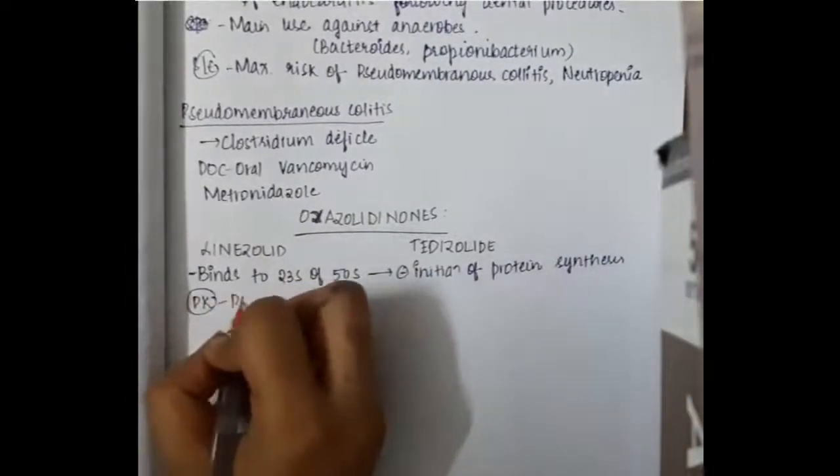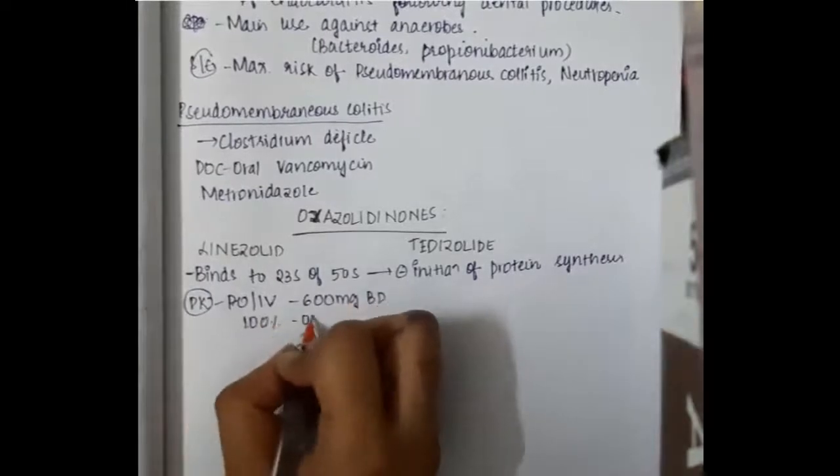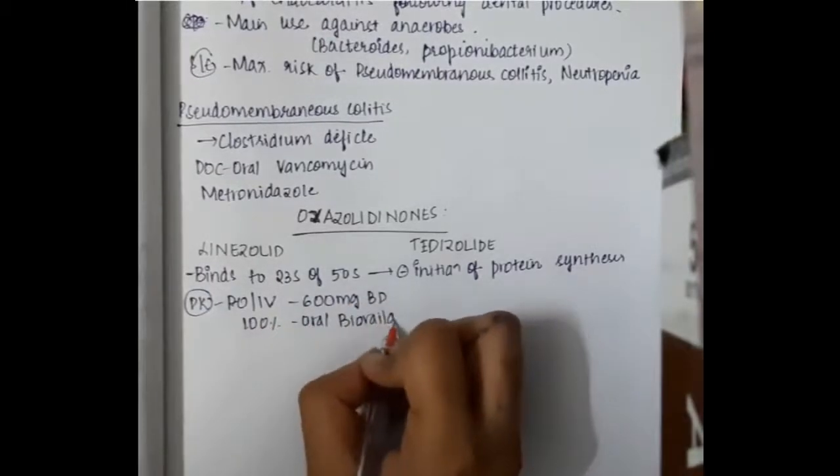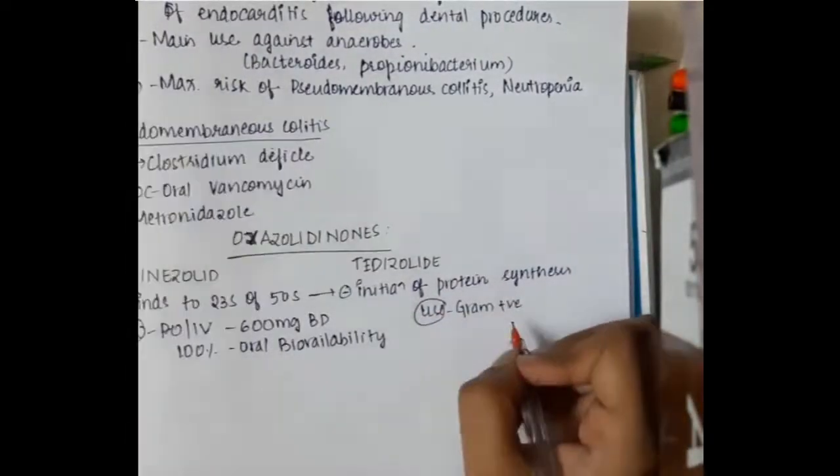For pharmacokinetics, these can be used either orally or IV. We give 600 mg BD, and this drug has 100% oral bioavailability.